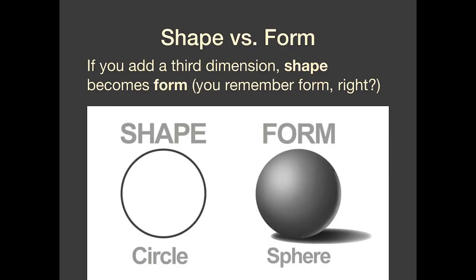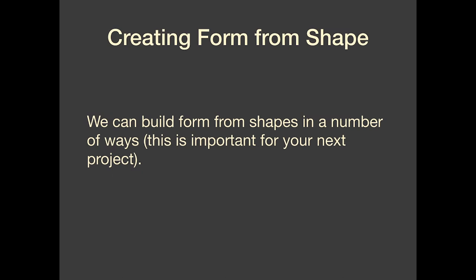Those are the categories of shapes — you'll want to know those so you can talk intelligently about them in class. Another thing we need to talk about: I would sometimes talk about shape and form together. I want to point out that these are very closely related, but there is a difference. Shape, remember, is two-dimensional — length times width. But when you add a third dimension, depth, your shape becomes form. You should all remember form because we talked about that with project one. For project two, we're going to need to create form from shapes, going to three dimensions from two dimensions.